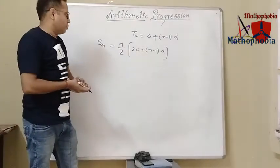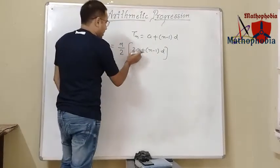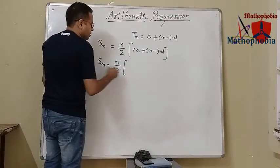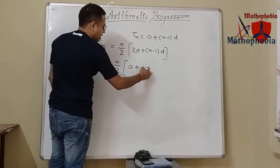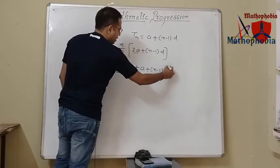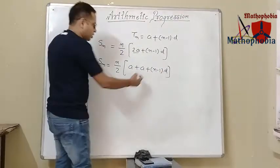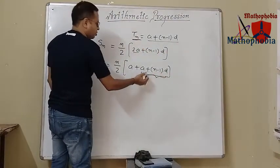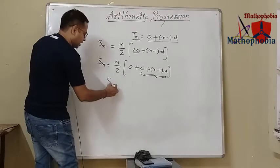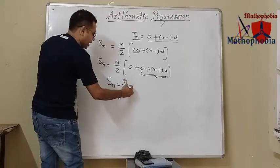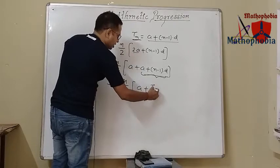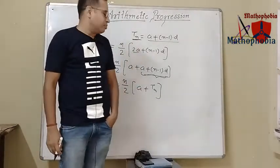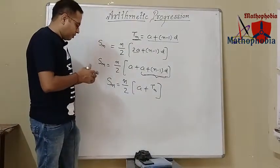Now how to apply this formula? One more thing — if I break it down, Sn equals n upon 2 times a plus a plus n minus 1 into d. Now what is this second part? It is the nth term, tn. So Sn equals n upon 2 times a plus tn, where tn denotes the nth term of the arithmetic progression. This will be clear with the help of a few questions.